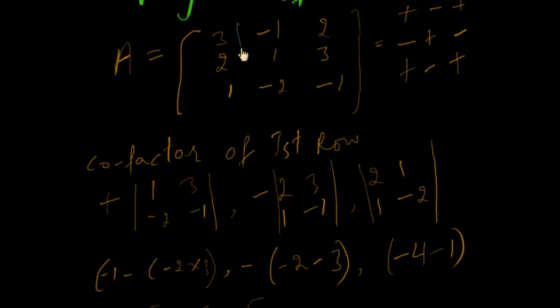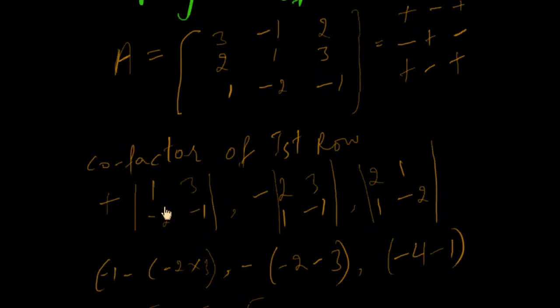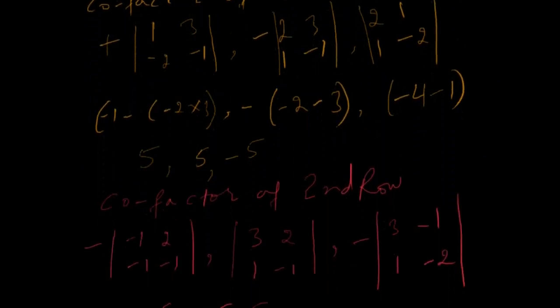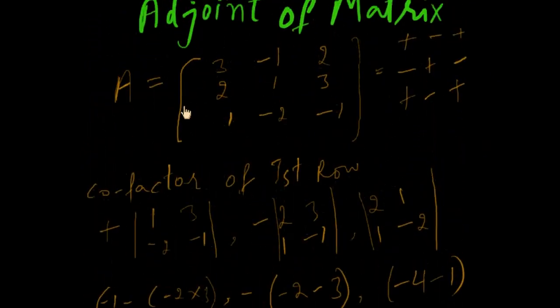Leave this row and this column, and we calculate the cofactor of 3, minus 1, and 2. These cofactors are 5, 5, and minus 5. For the cofactor of the second row, we will calculate the cofactor of 2, the cofactor of 1, and the cofactor of 3.